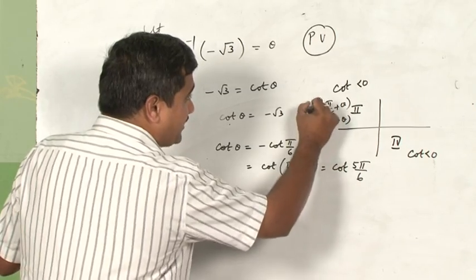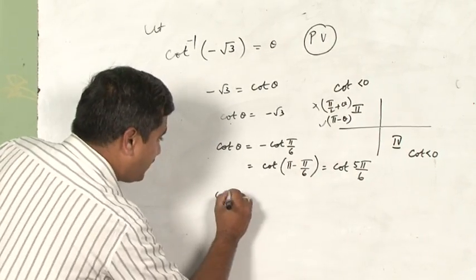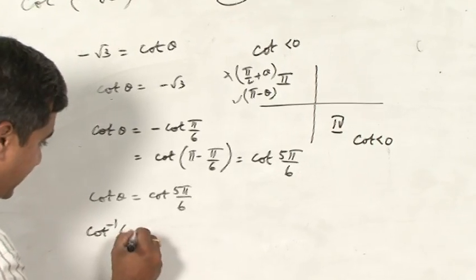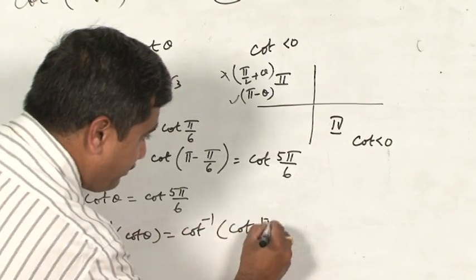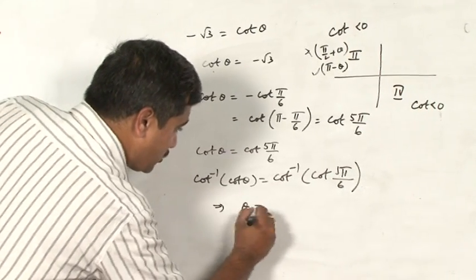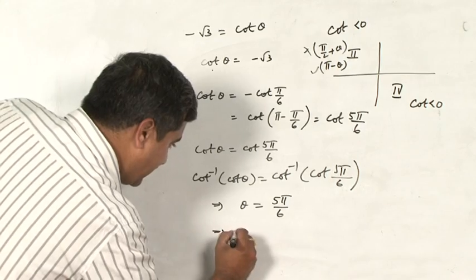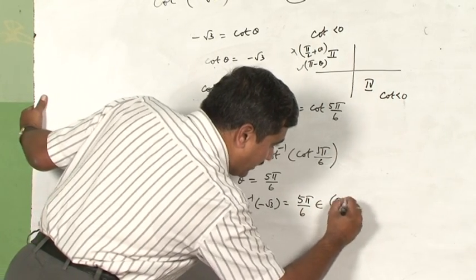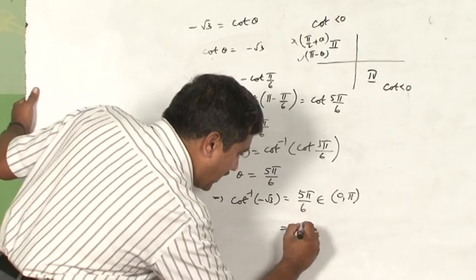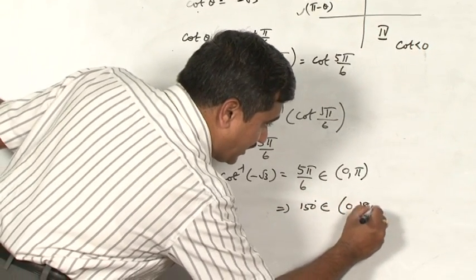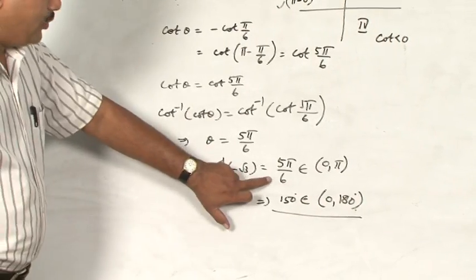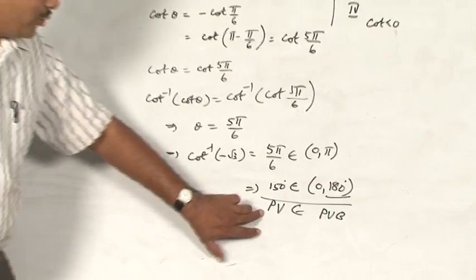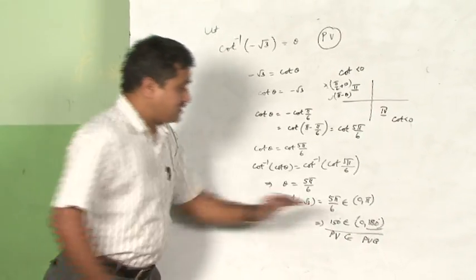So cot θ = cot(5π/6), which implies θ = 5π/6. Thus cot⁻¹(-√3) = 5π/6, which belongs to (0, π) — since 150° belongs to (0°, 180°). Therefore this value is called the principal value, and (0, π) is the principal value branch of cot inverse. We have found a principal value within the principal value branch of cot inverse.